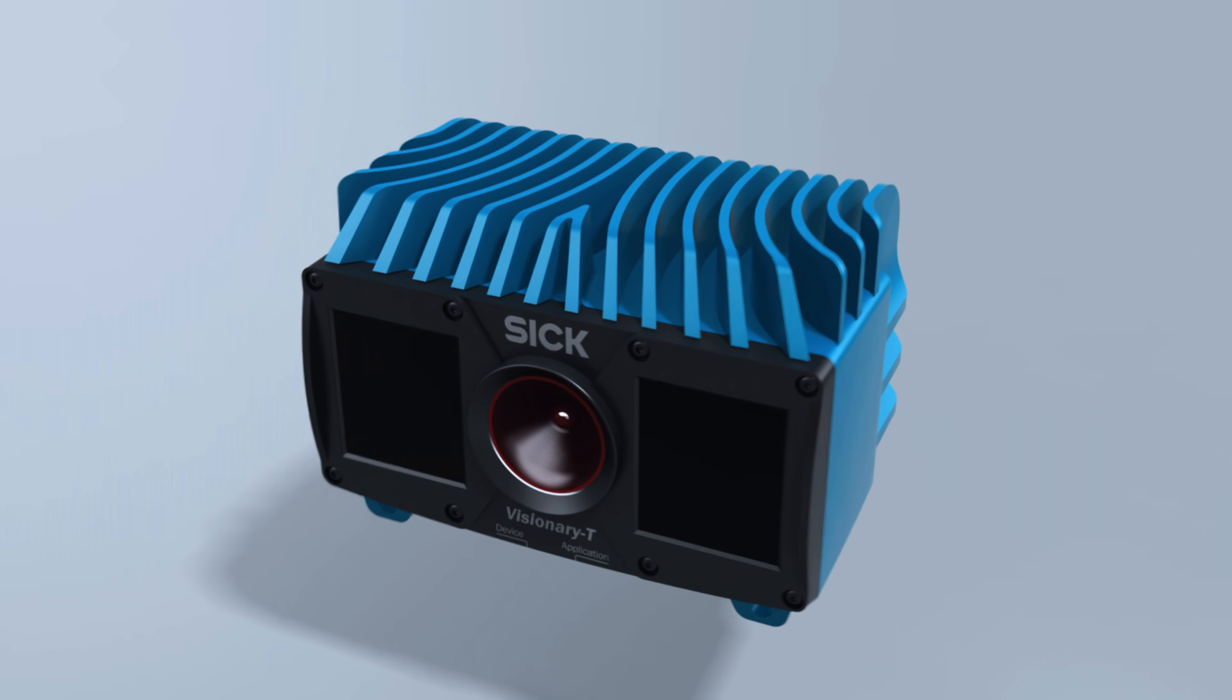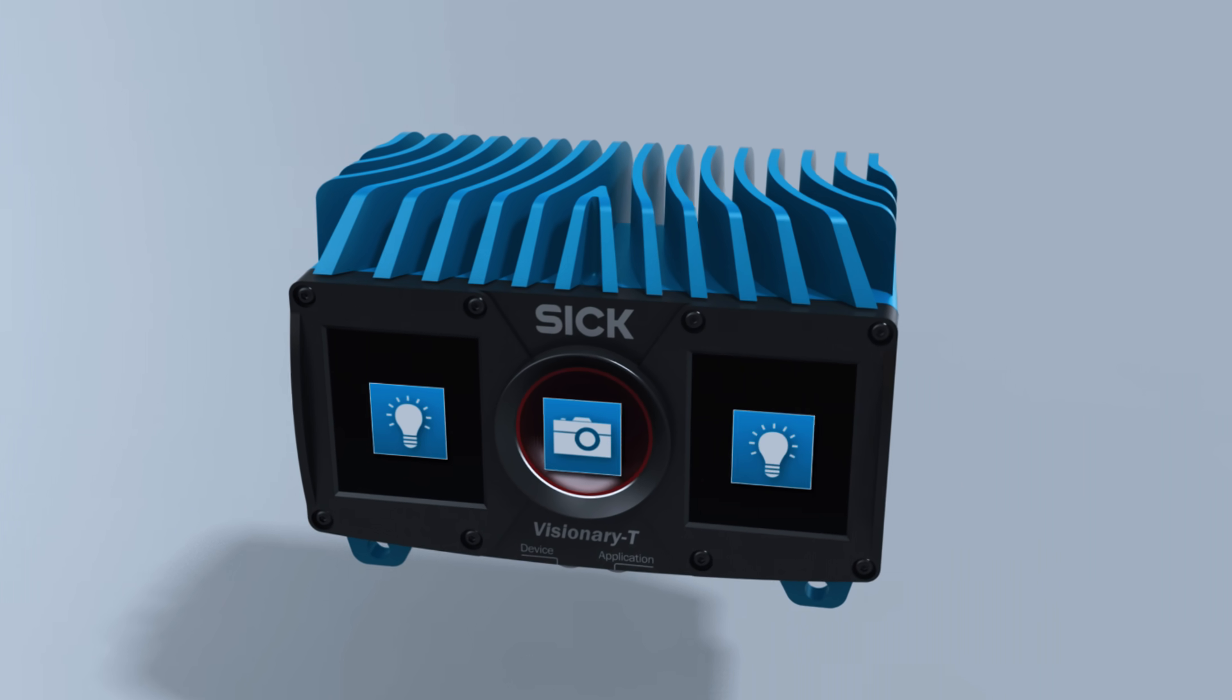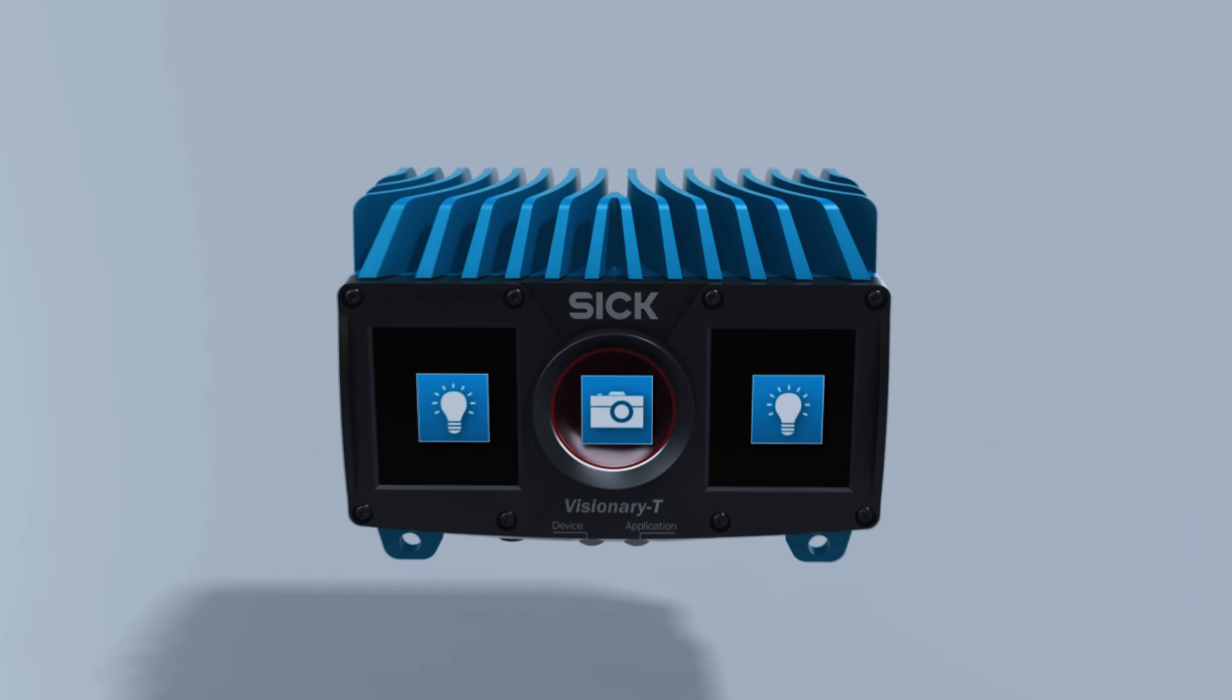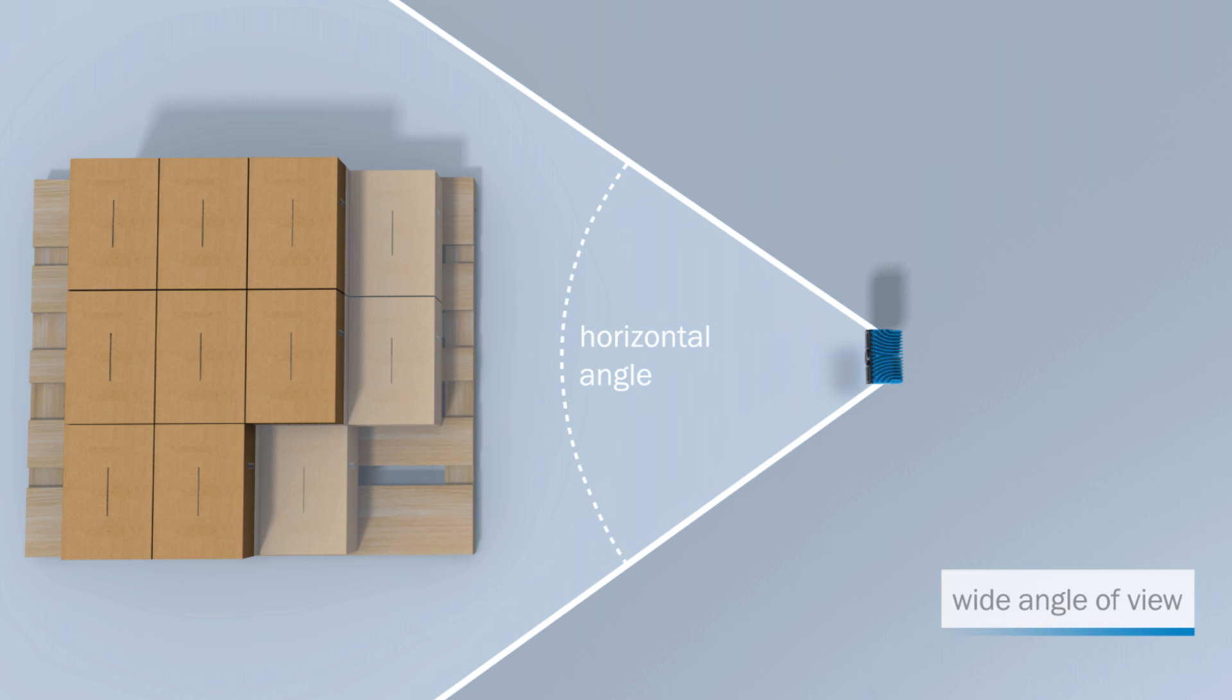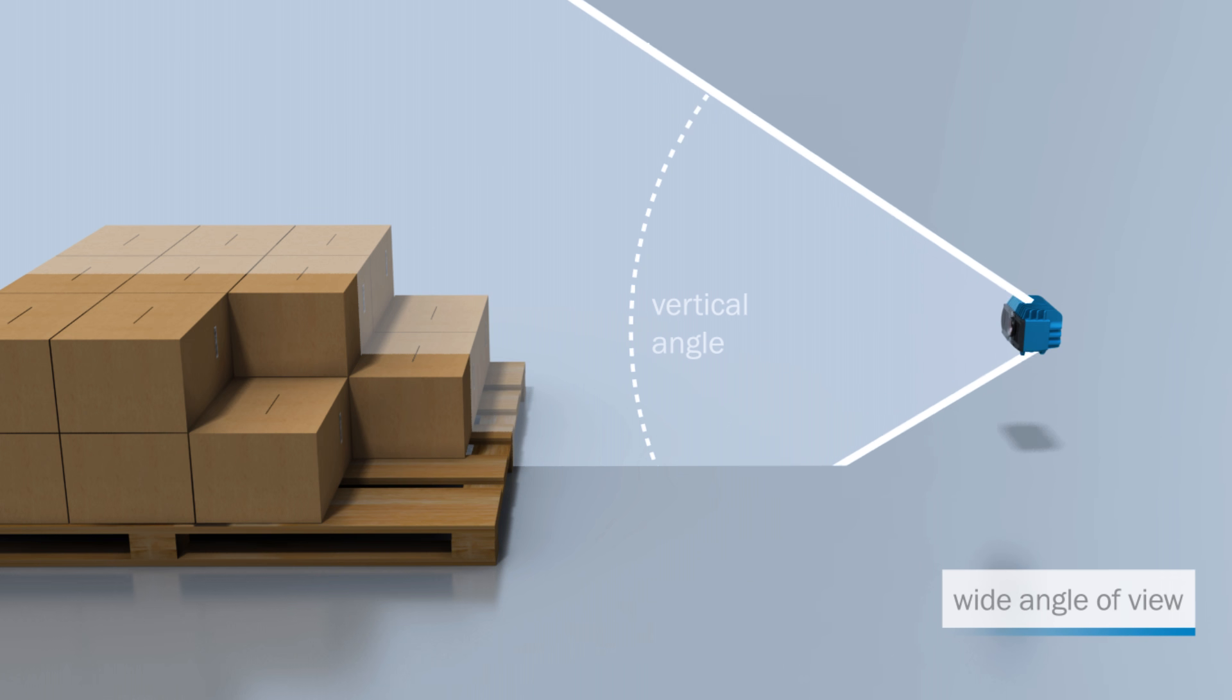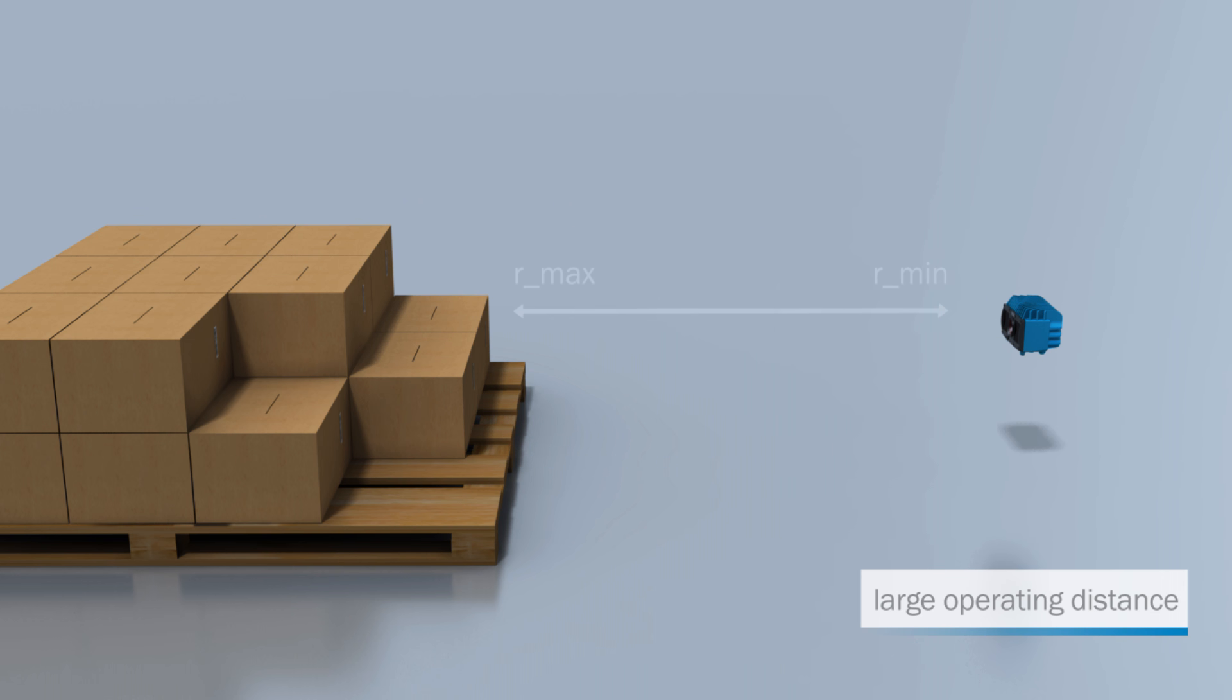With Visionary T from SICK, the central detection optics are located between powerful illumination sources. Visionary T has a wide angle of view in both horizontal and vertical directions, as well as a large operating distance.